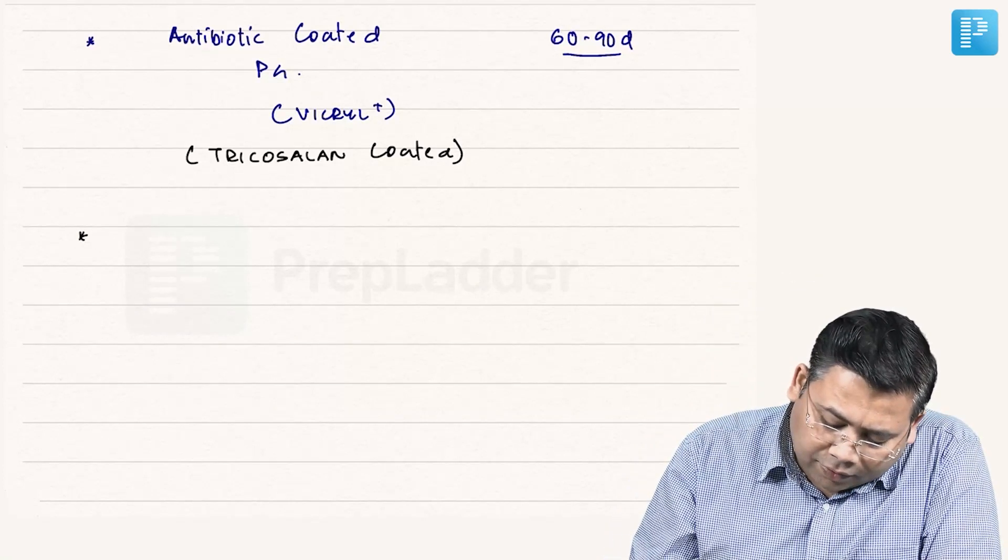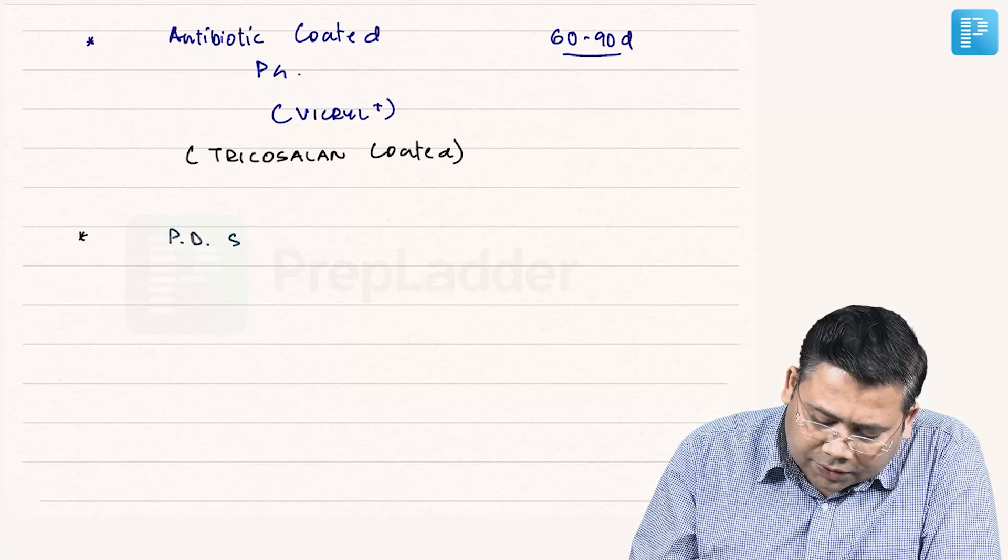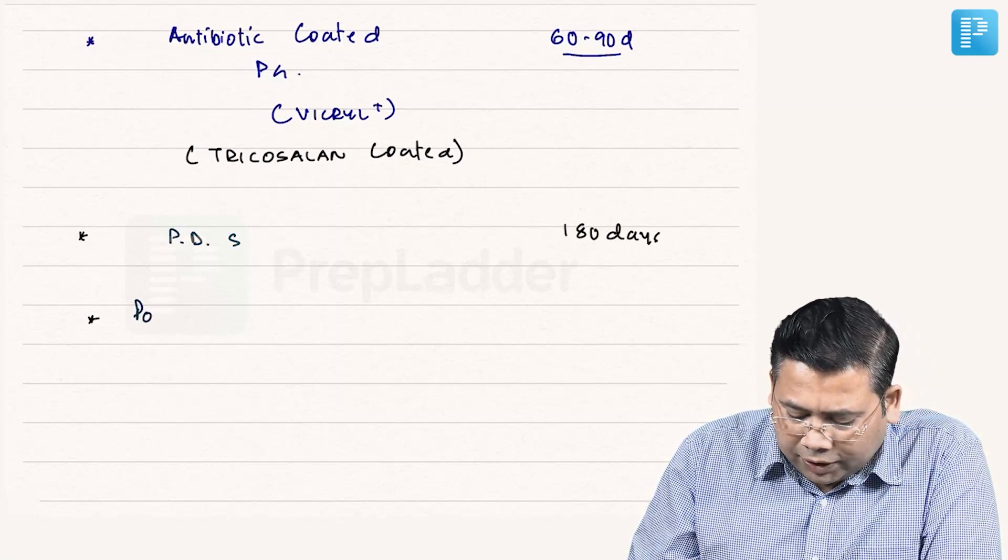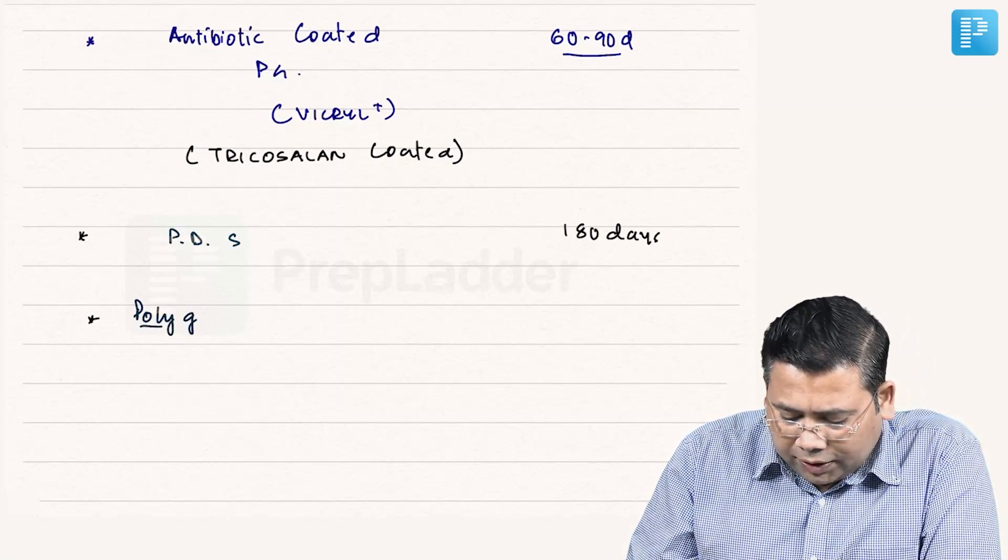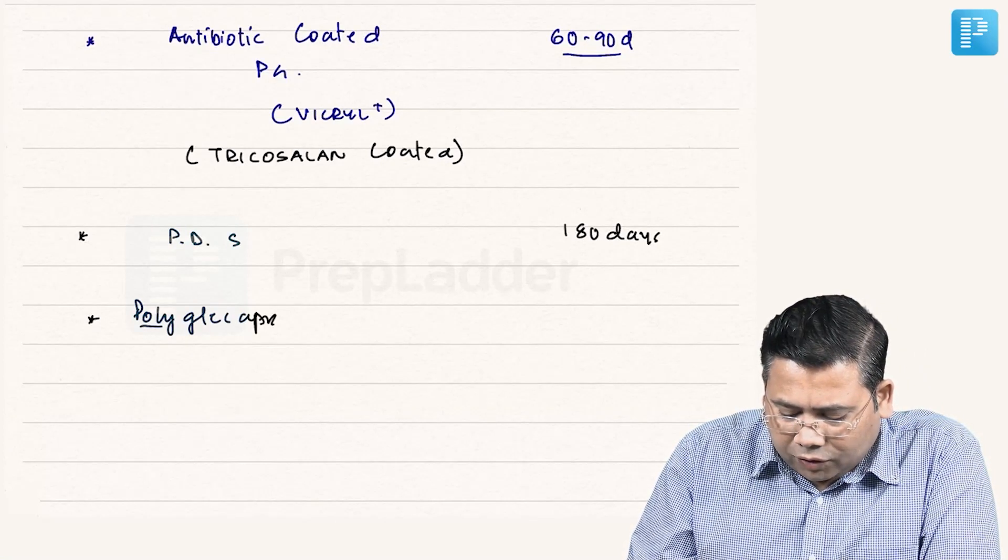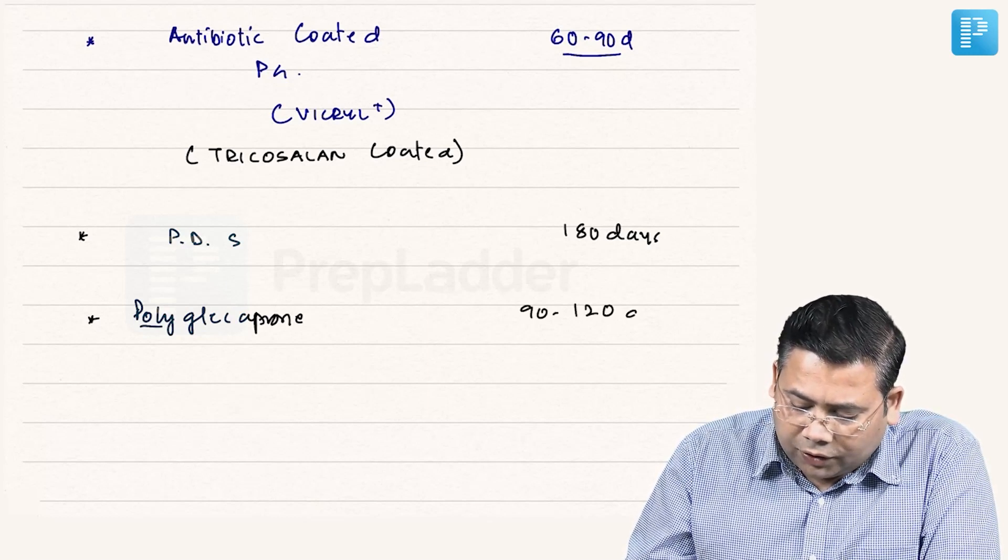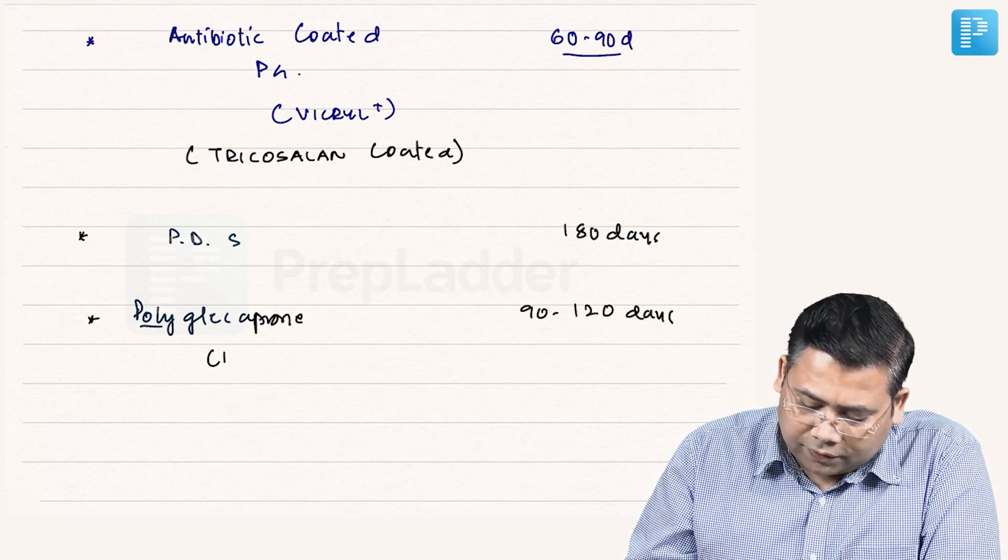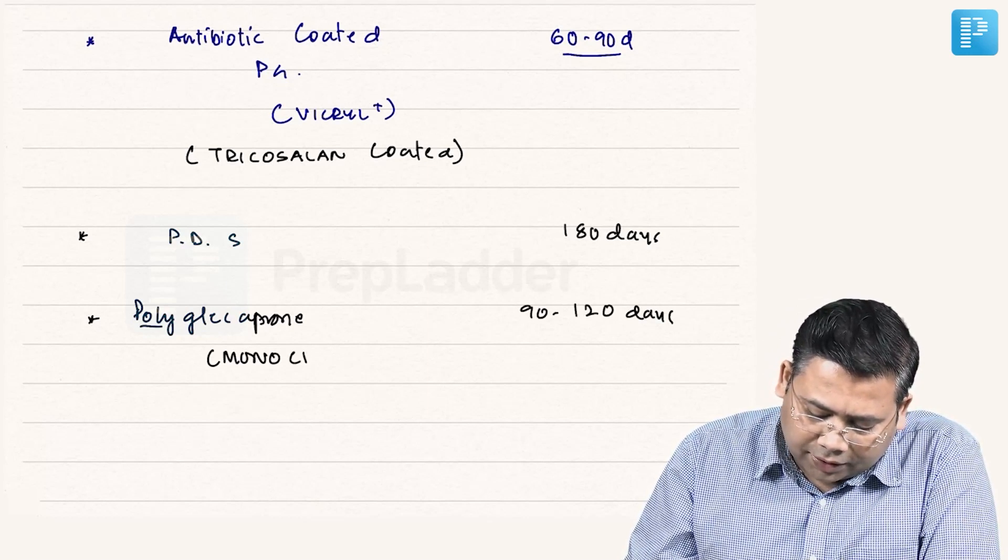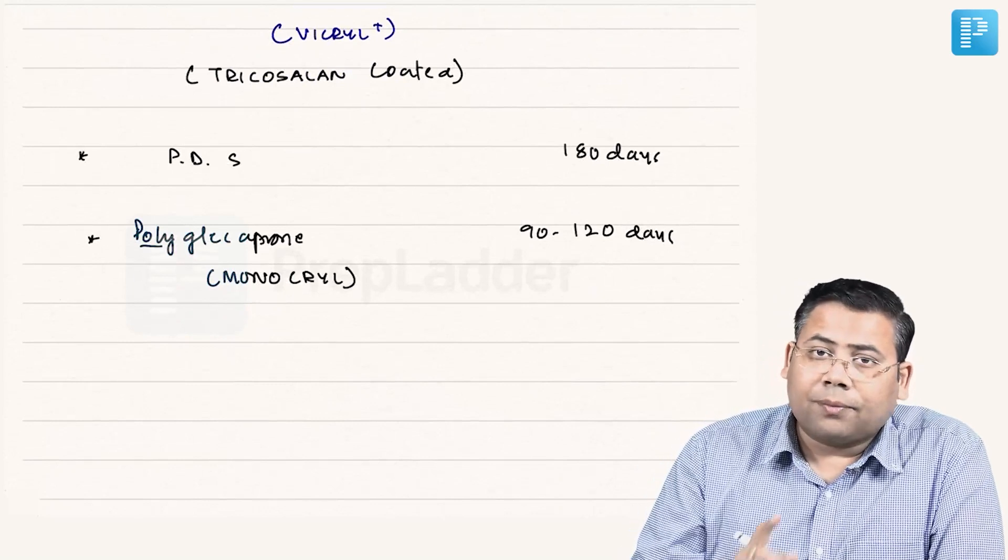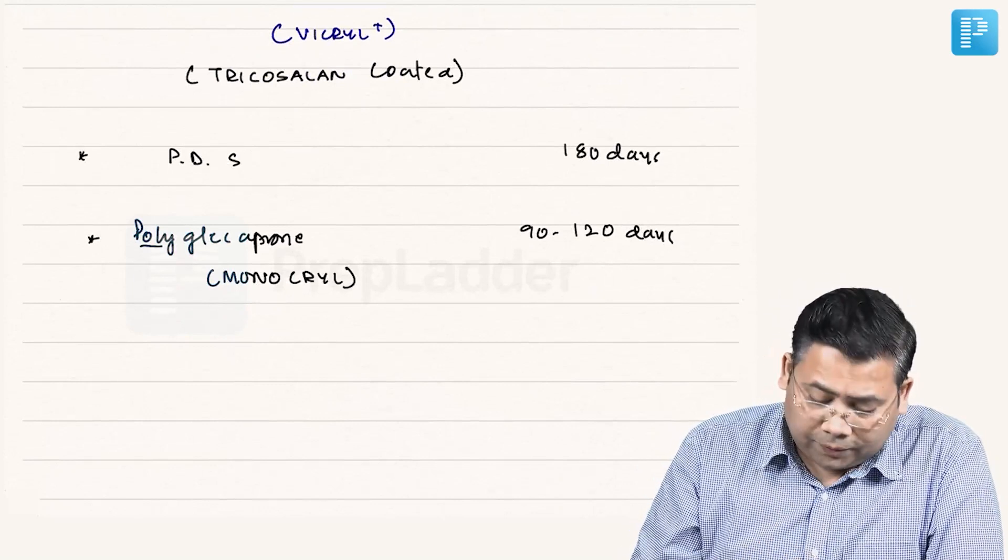Then we have polydioxone, I have already discussed polydioxone 180 days. Then we have polyglecaprone. When we talk about polyglecaprone, it is 90 to 120 days and it is the ideal suture. This is marketed by the name of Monocryl and this is ideal suture for subcutaneous suturing.